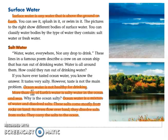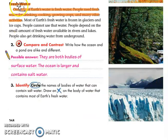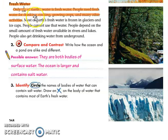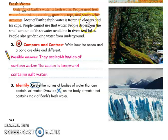Another example of surface water is fresh water. Only 3% of the entire total of water here on Earth is fresh water. Fresh water is water that is drinkable — meaning we could use it for drinking, cooking, growing crops, and other activities. Examples of fresh water are rivers and ponds. It could also be the frozen water in the Arctic region, like the glaciers.